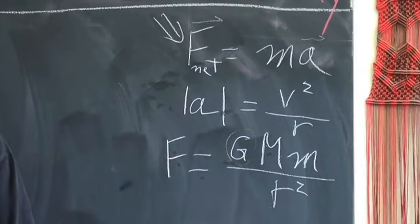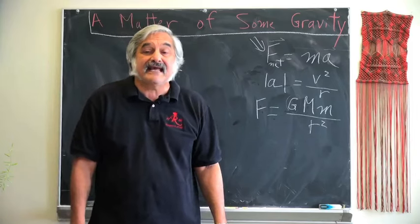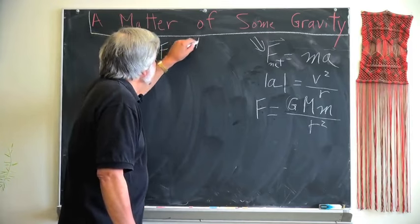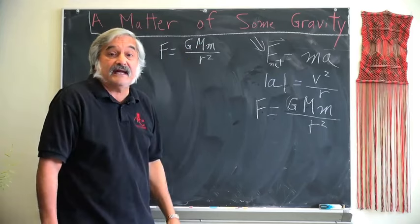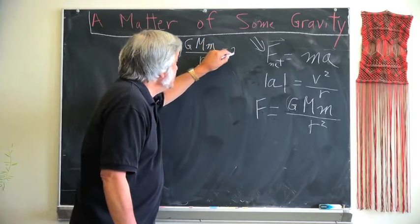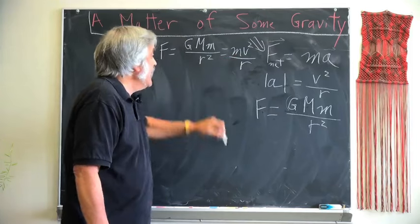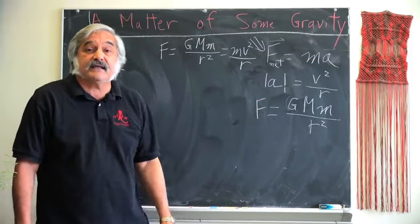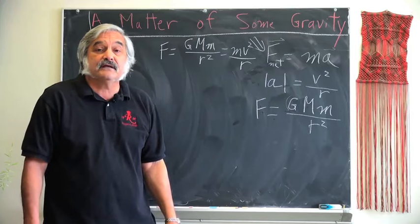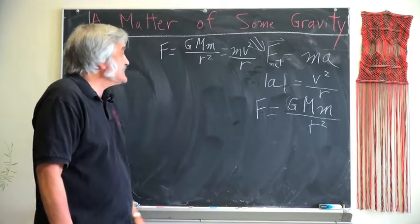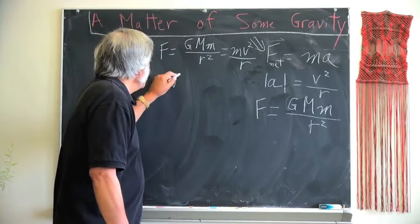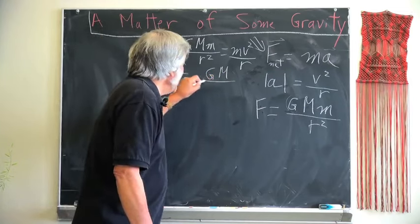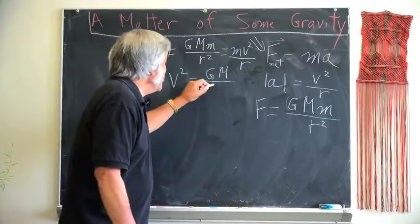First, imagine that big M is the sun, and little m is any planet. Then we have F equals GMM over r squared, and that's going to be little m v squared over r, where now we're substituting for the acceleration our understanding for how things move in a circular orbit. So, if we solve for v squared, we find that v squared is equal to G, capital M, the mass of the sun, divided by r.